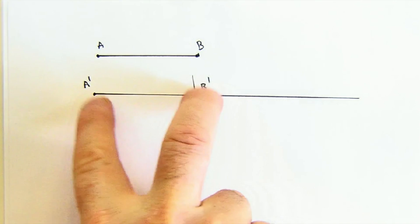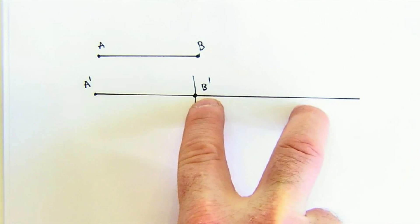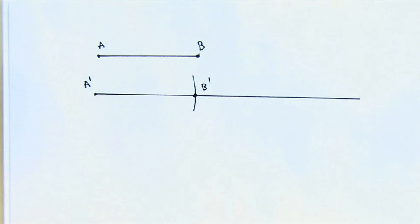And we could copy multiple segments. If we needed two ABs, we could copy one and a second one and so on. It's quite an easy task.